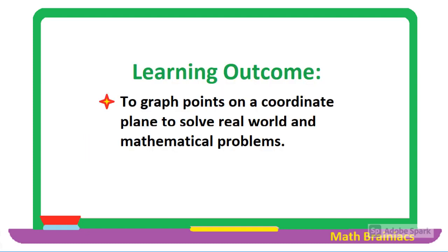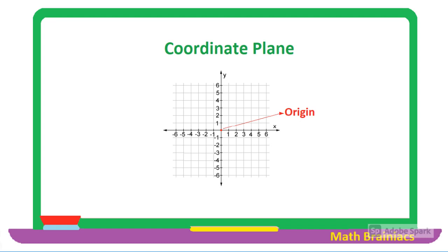We are going to learn today how to graph points on a coordinate plane to solve real-world and mathematical problems. A coordinate plane is a two-dimensional plane formed with the intersection of the vertical line called the y-axis and the horizontal line called the x-axis. The intersection point of the two lines is called the origin, while any point on the coordinate plane is called an ordered pair.